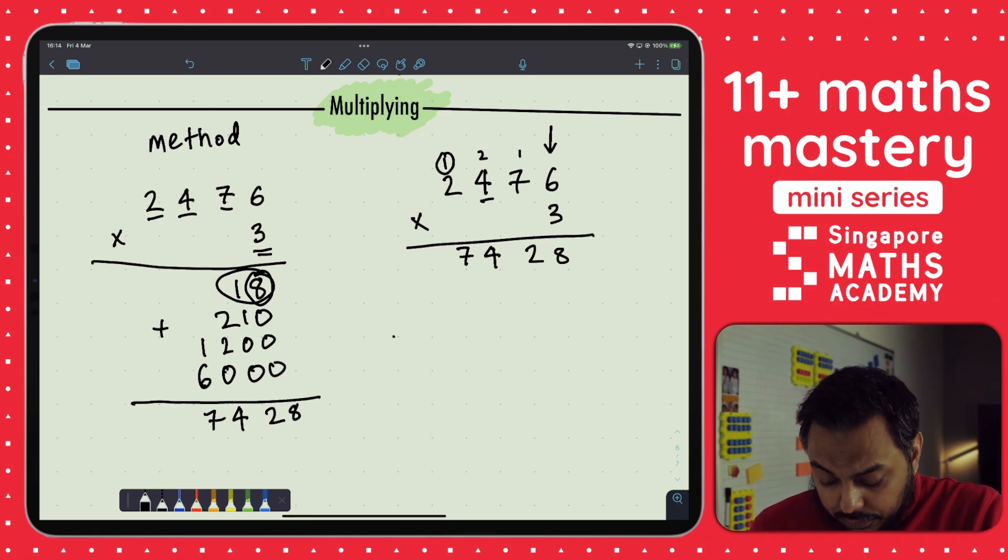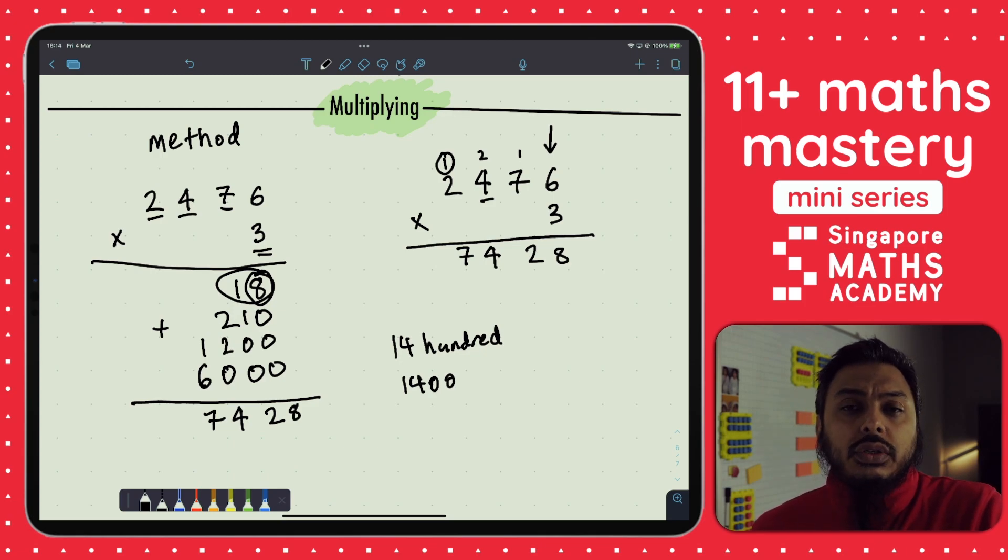Remember, 1,400 is the same as 1,400. Why is that? Because 1,400 is 1,000 add 400. 10 lots of hundreds is 1,000. So 1,400 is 1,400. And that's how we get 7,428.